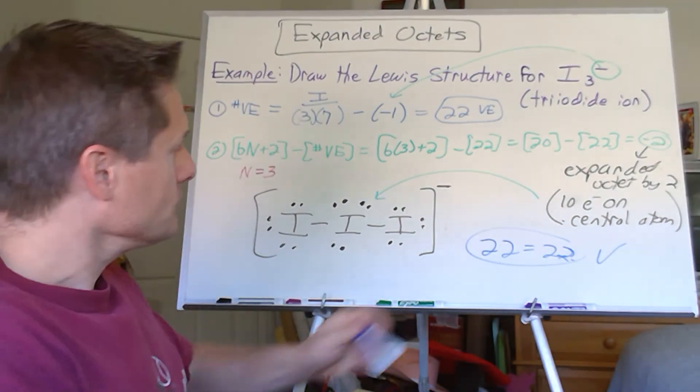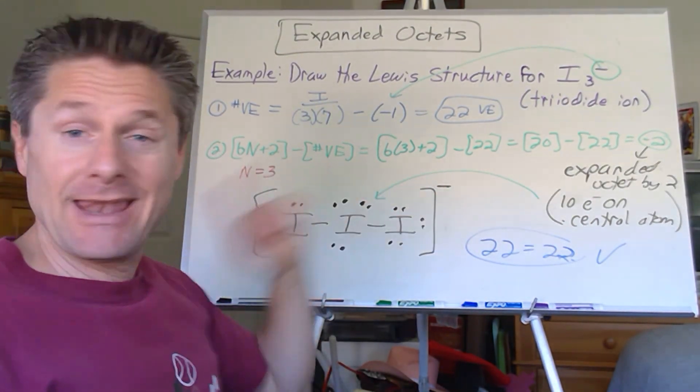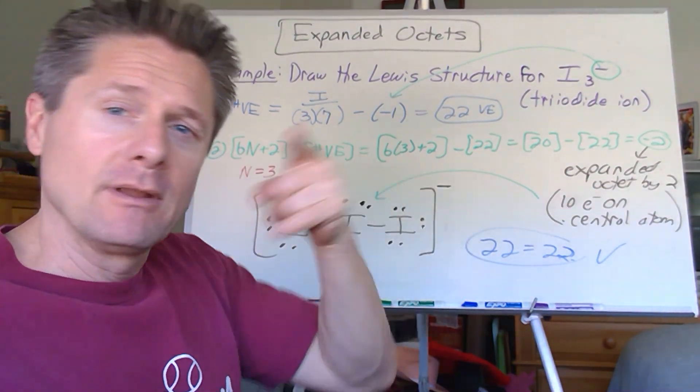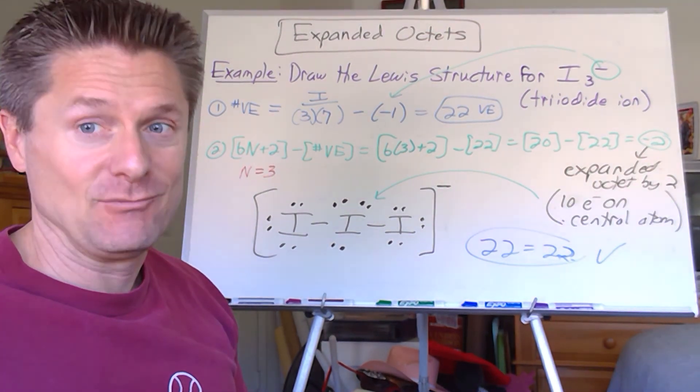Oh, hikey teek. And so there you go. An expanded octet and a charged species. Yay. I think these are pretty straightforward. Let's do a whole new video with electron deficient species. You can do this.